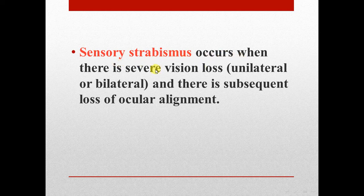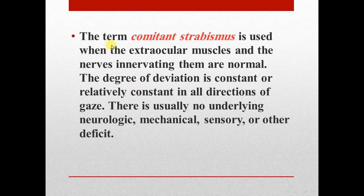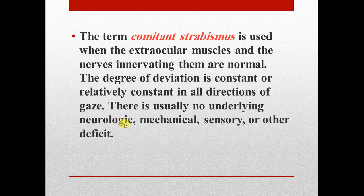Sensory strabismus occurs when there is severe vision loss, unilateral or bilateral, with subsequent loss of ocular alignment. The term comitant strabismus is used when the extraocular muscles and the nerves innervating them are normal; the degree of deviation is constant or relatively constant in all directions of gaze, with usually no underlying neurological, mechanical, sensory, or other deficit.